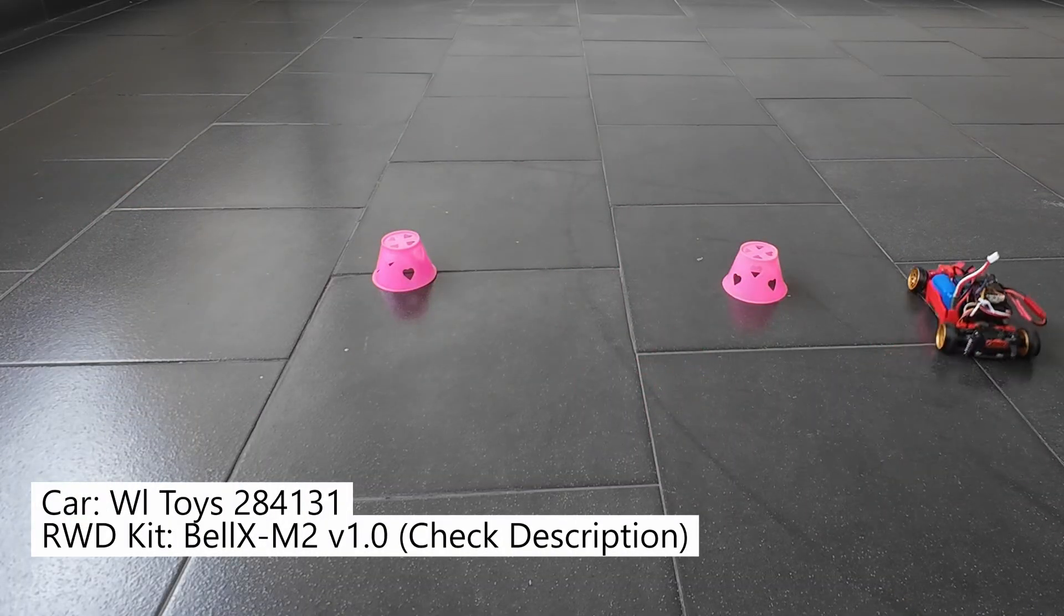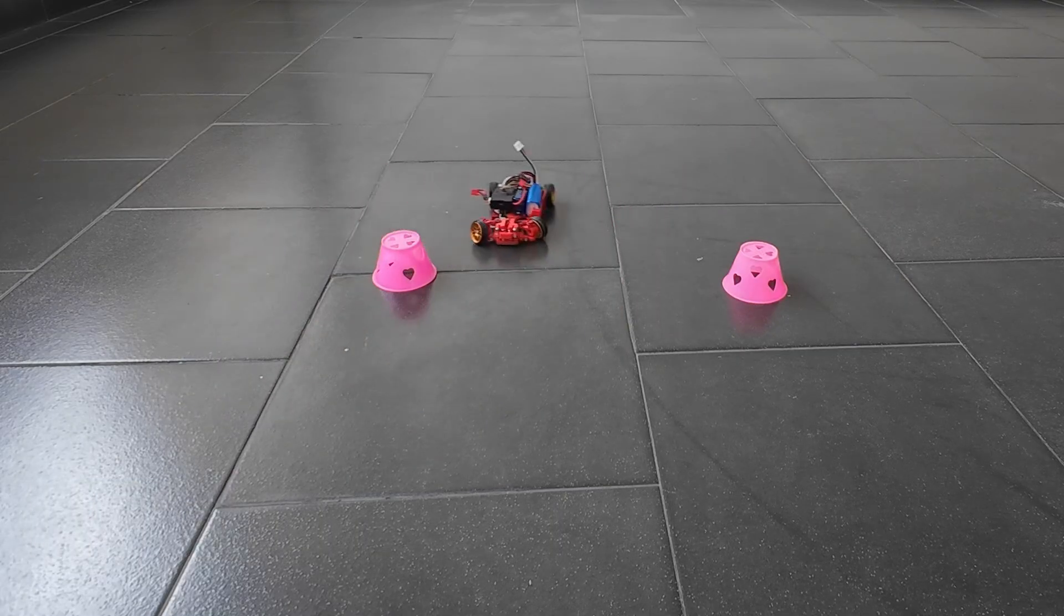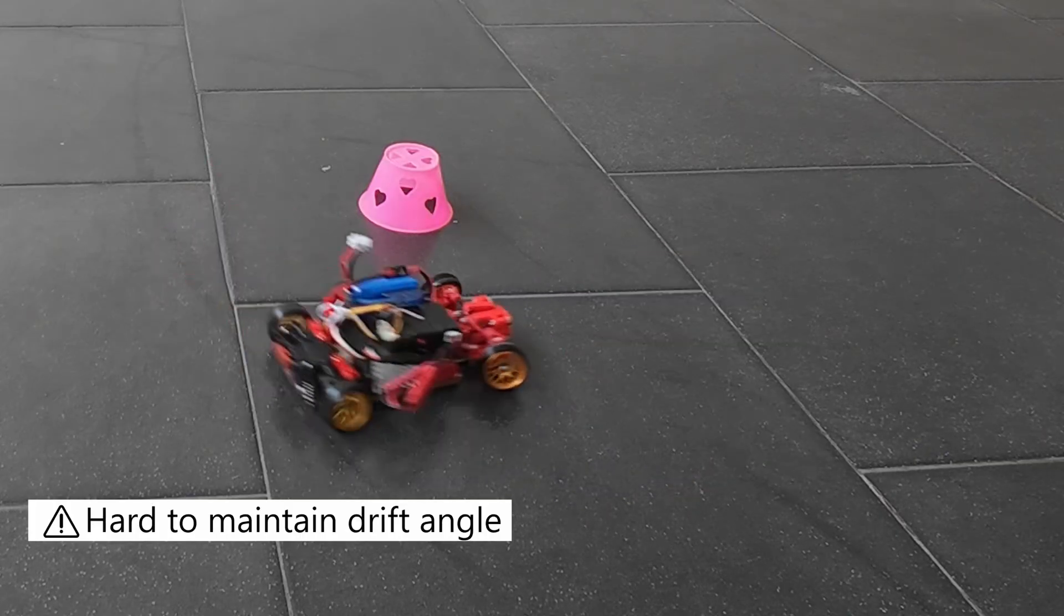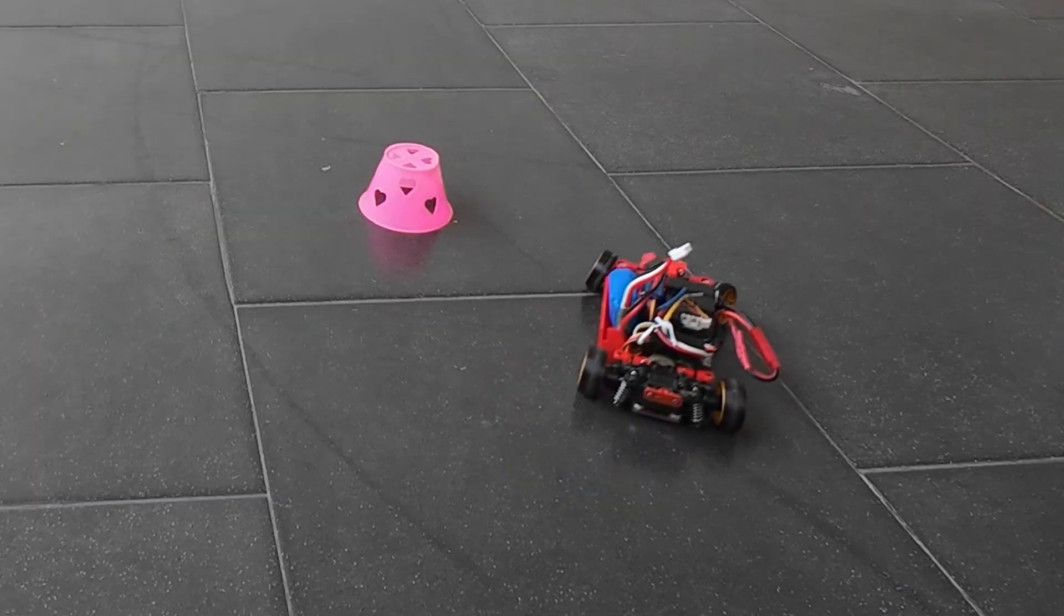This is a video of the WL Toys 284131 RWD RC Drift Car with too much rear toe-in. Notice how the car doesn't want to slide and quickly tries to return to a straight position instead of holding the drift line during long-angle drifts.